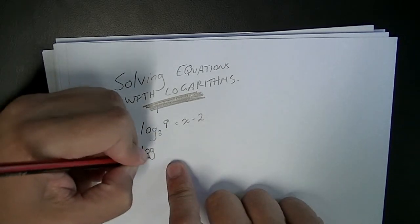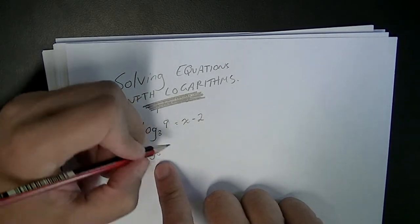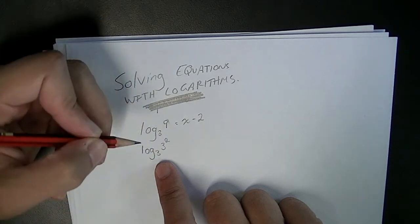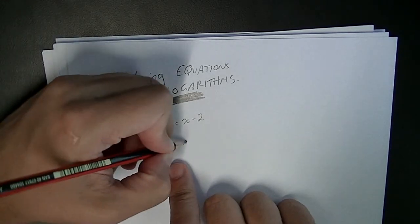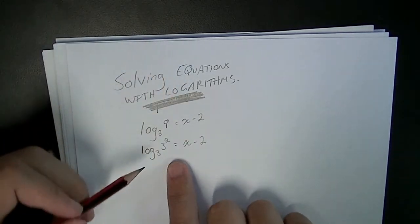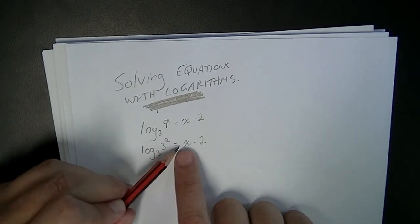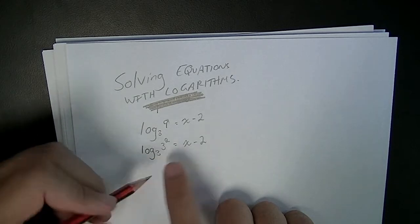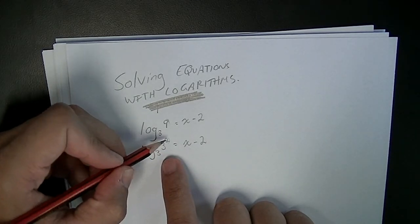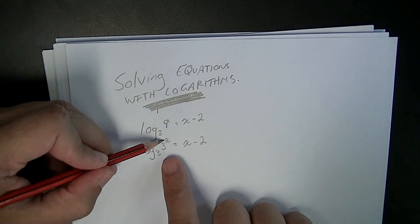So we could rewrite that as log base 3, 3 to the 2 is equal to x minus 2. So log base 3, 3 squared equals x minus 2. Now when you see that power up the top, you should be able to remember your third log law.